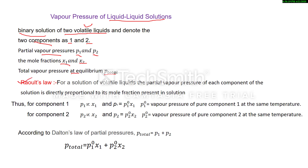Then we apply Raoult's law. The statement is: for a solution of volatile liquids, the partial vapor pressure of each component of the solution is directly proportional to its mole fraction present in the solution.